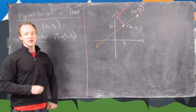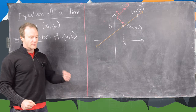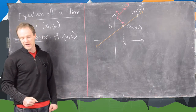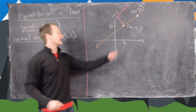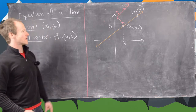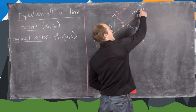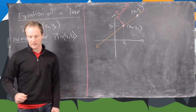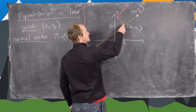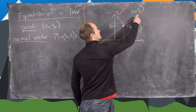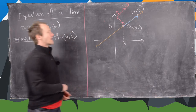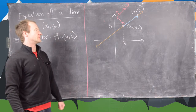Now what we're going to use is the equivalent definition of orthogonality given by the dot product. We're going to form a vector out of x-naught, y-naught, which we know is on the line, and this arbitrary point x, y on the line. We do that by taking the initial point to be x-naught, y-naught and the terminal point to be x, y. So we get that vector right there, which I've made blue.